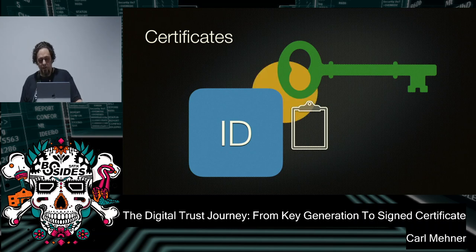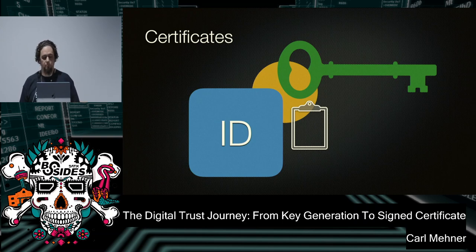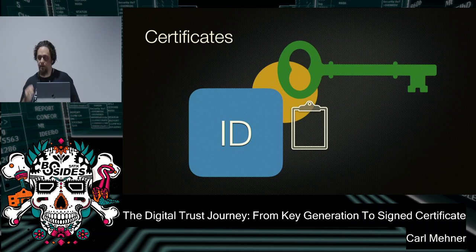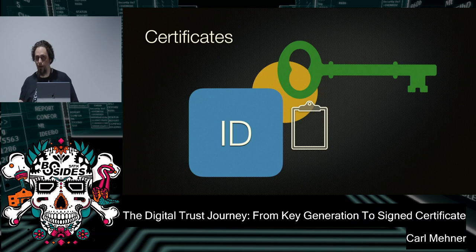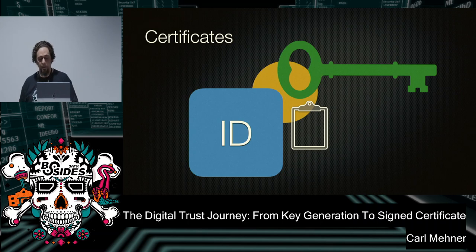But how do we trust the binding between the certificate and the key? Well, that's what certificate authorities are for. Certificate authorities are embedded into browsers and operating systems, and they're the root of trust for this binding of the ID to the key. Certificate authorities have a very specific set of rules that they have to follow, and those are laid down by the trust store operators. All of the CAs, because of those rules they have to follow, are audited and held to a very high standard.